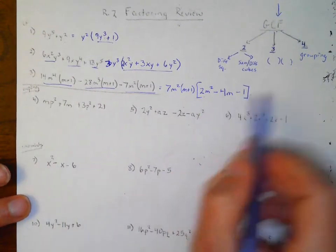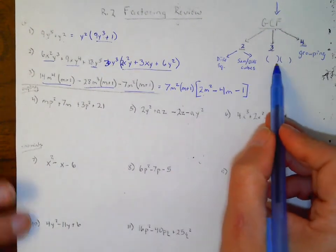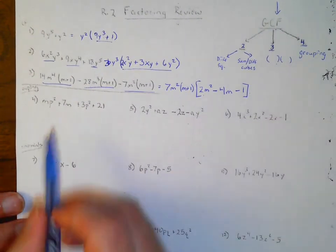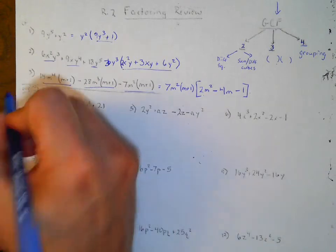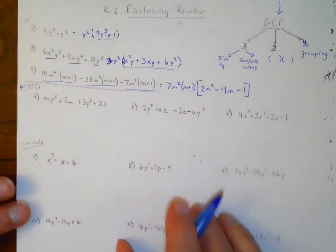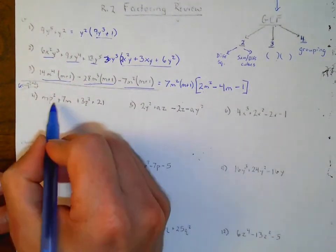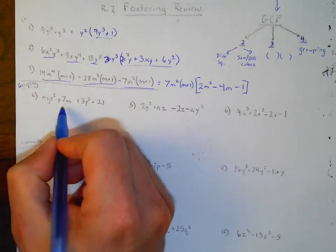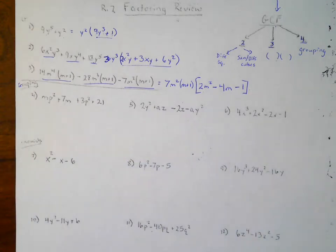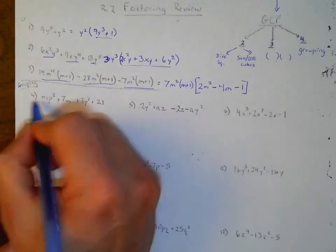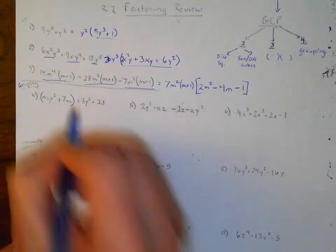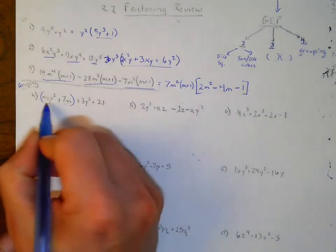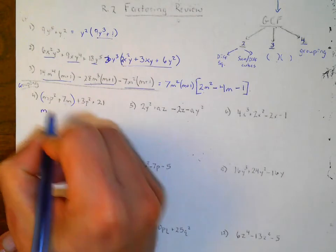Once again, there are three terms — you could look to factor further, but it won't factor. Next is factor by grouping. What we're going to do is group the first two terms together and then the second two terms together.